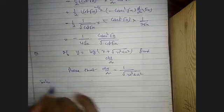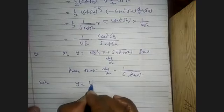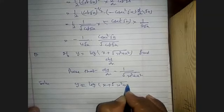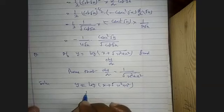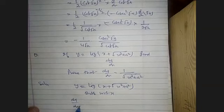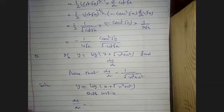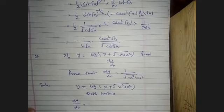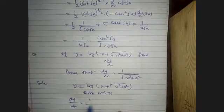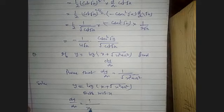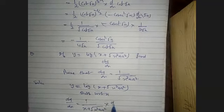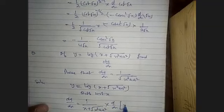Solution: y equals log(x + √(x² + a²)). Differentiating with respect to x, by chain rule: dy/dx = 1/(x + √(x² + a²)) · d/dx of (x + √(x² + a²)).